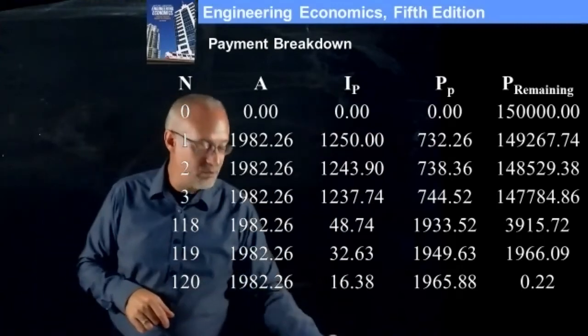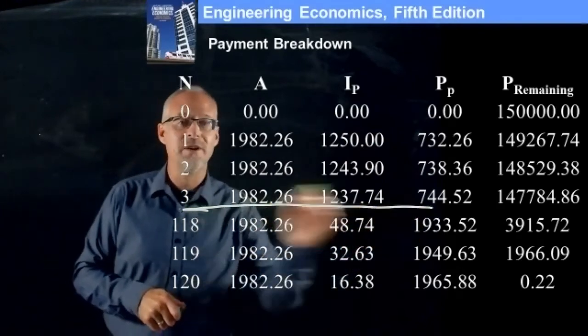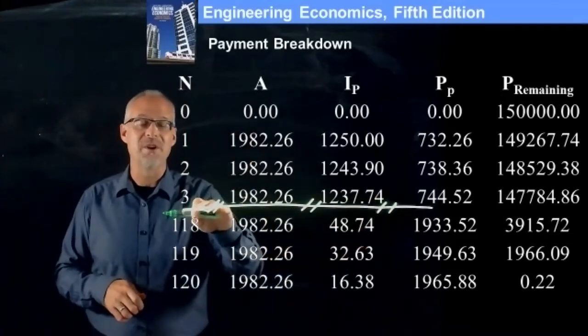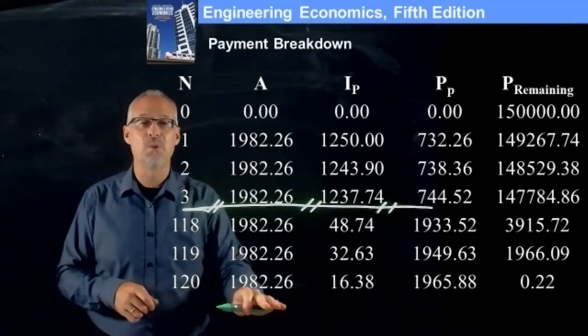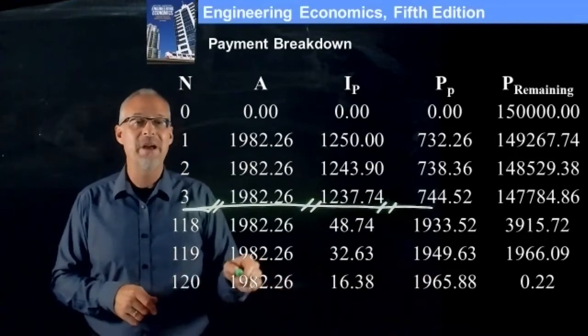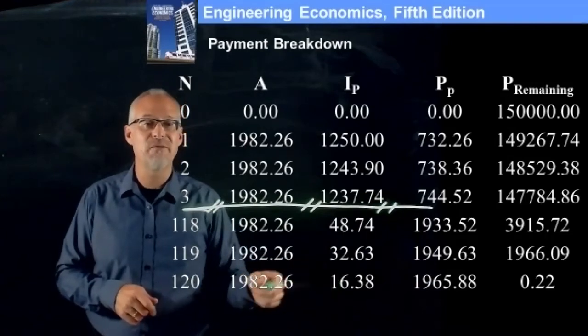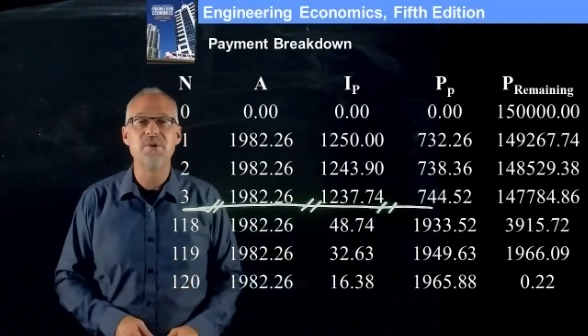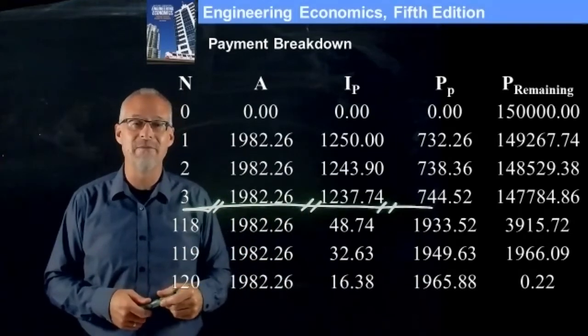And then in here, we kind of skip. So there's really kind of a discontinuity here. There should be a line that goes across here. This is a break in time. We're going to skip a whole bunch of rows. We're going to skip all the way to the end of this mortgage at month 120. So at month 120, by the time we get down here, we're only owing 1966. We pay our 1982, interest of $16.38 is charged. So the difference between those two is what we end up paying down, which leaves us a balance at the end of only 22 cents. And the 22 cents is basically the summation of all the rounding errors that went into the time value of money calculations.